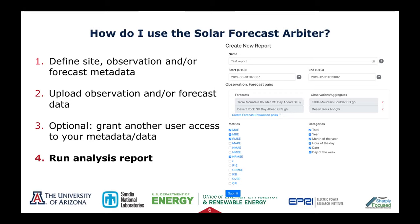Next, you select the metrics of interest for the report, including options such as mean absolute error, mean bias error, root mean squared error, normalized versions of these metrics, and metrics that describe distributions. Metrics for event and probabilistic forecasts are also available. Then you select the time categories over which the metrics will be calculated, such as the total, by day, or by hour. Finally, you click submit and wait a few seconds or a few minutes depending on the amount of data to be processed on our server.